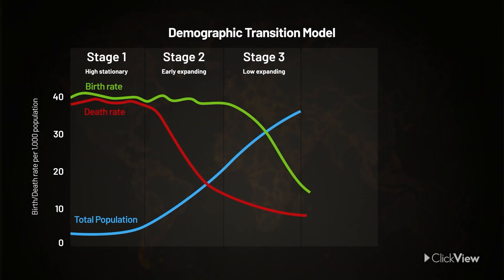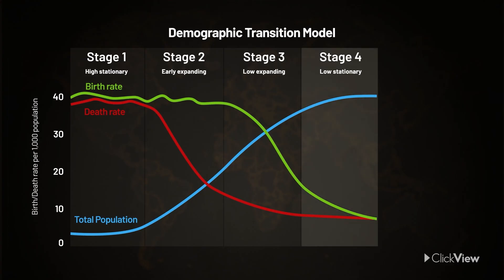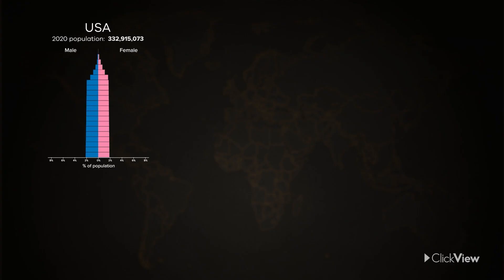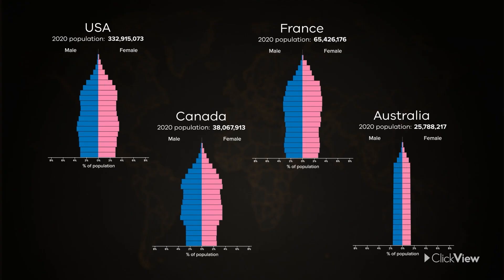Over time, the reduced birth rate will be matched by a relatively low death rate, and the population will no longer increase or decrease. Stage four of the demographic transition model is when low death rates and low birth rates create a stable population. Most of the world's developed nations, such as the U.S., France, Canada, and Australia, are at stage four.